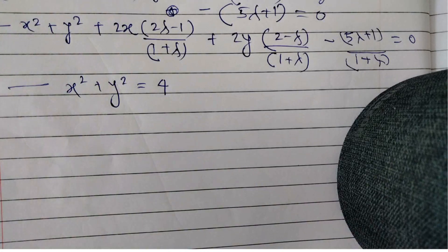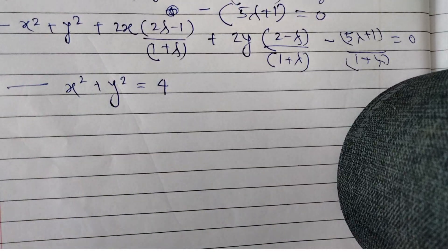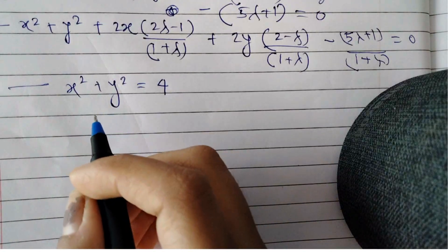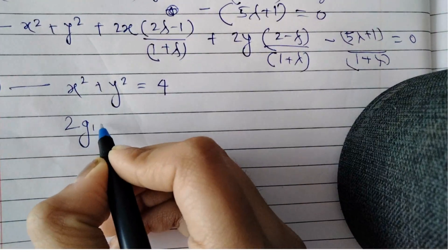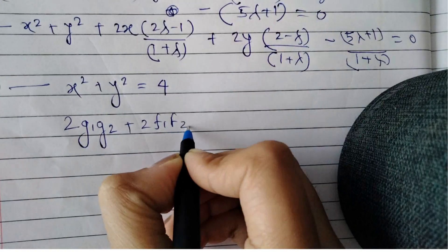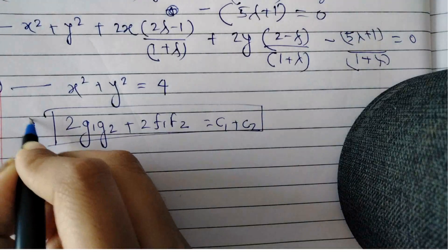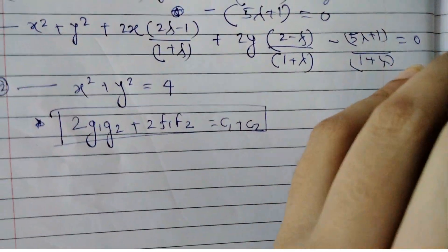Let us write the condition of orthogonality. Two circles are said to be orthogonal when their angle of intersection is 90°. The key formula is: 2g₁g₂ + 2f₁f₂ = c₁ + c₂. Let us apply this condition.